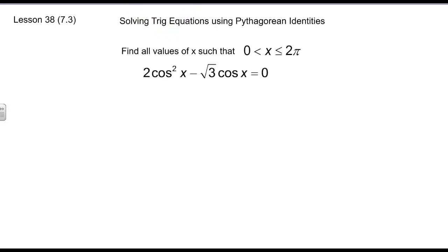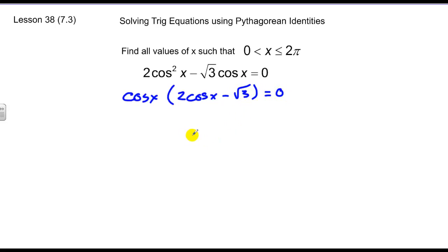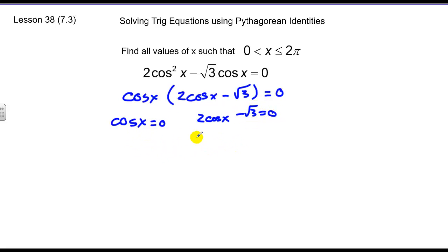I'll factor a cosine out of both terms: cosine x times (two cosine x minus root three) equals zero. Using the zero product principle, if these two factors multiply to zero, one of them has to equal zero. So cosine of x equals zero, and cosine of x equals positive root three over two.